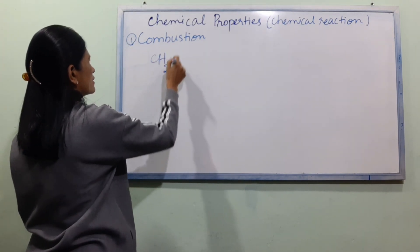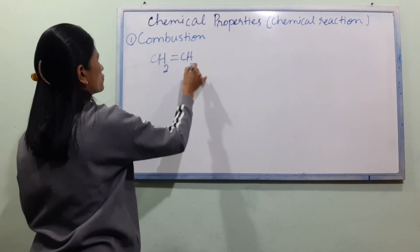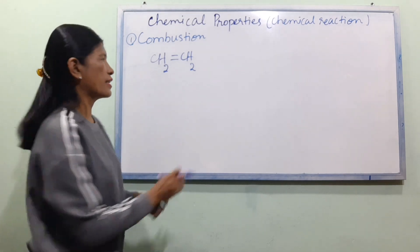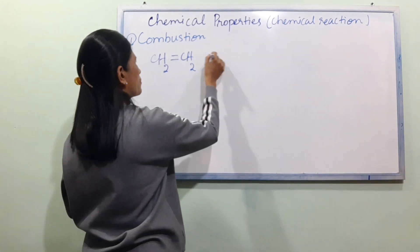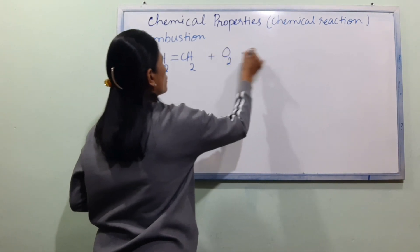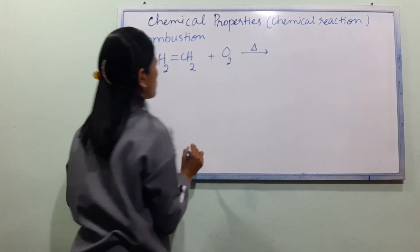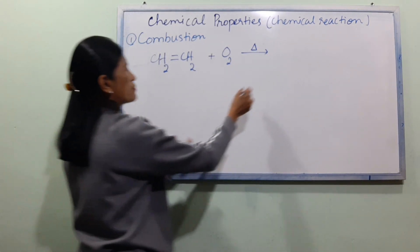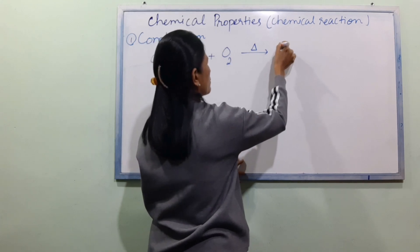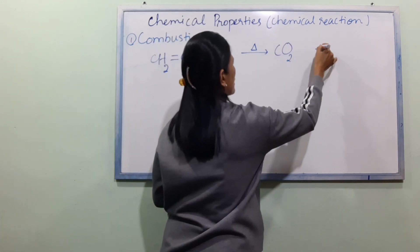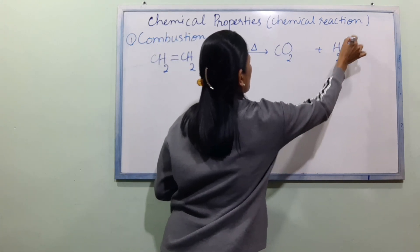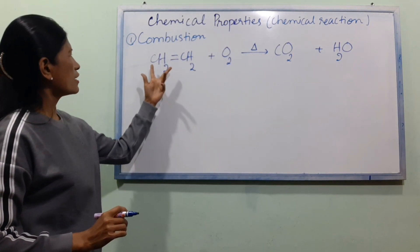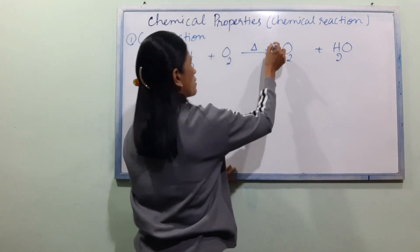CH2=CH2 reacts with O2. This gives C2H4 plus O2 to produce CO2 and H2O.